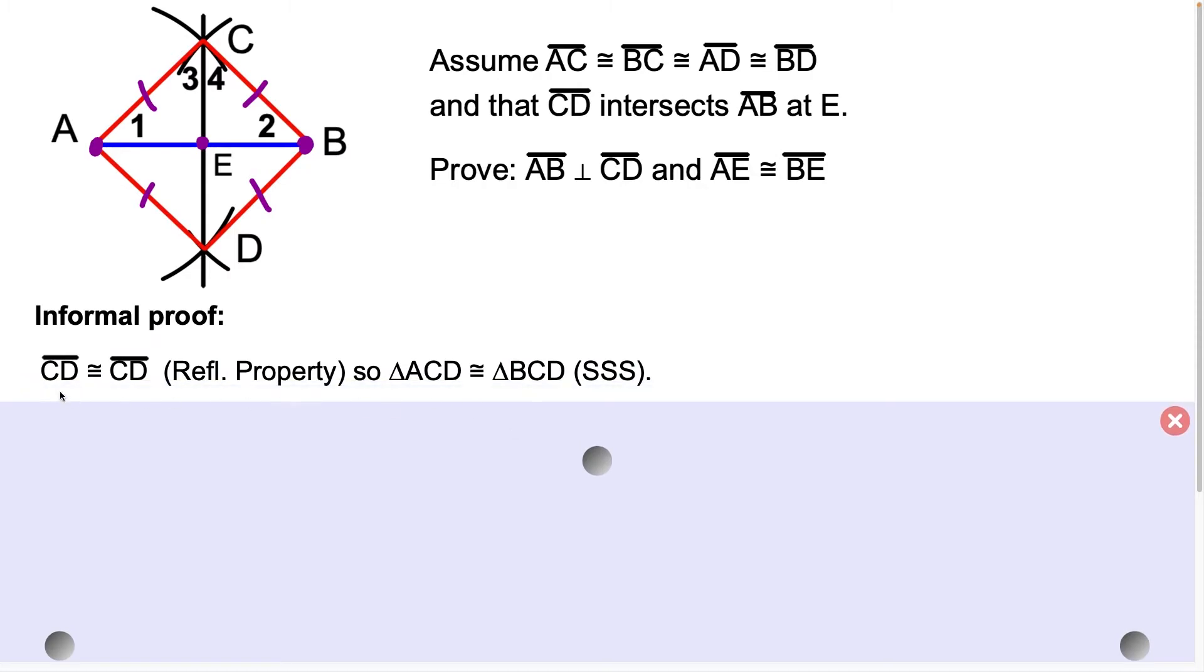The first thing we'll say here is that segment CD is congruent to itself by the reflexive property, and that'll allow us to say that triangle ACD is congruent to triangle BCD by the side-side-side postulate.